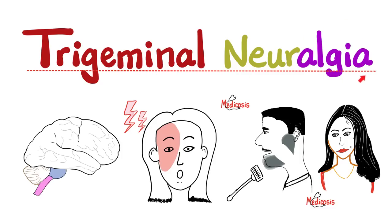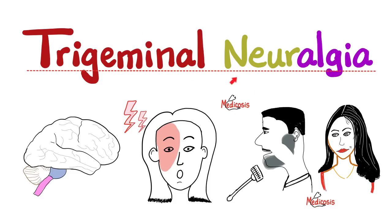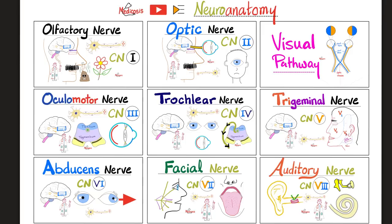What does 'algia' mean? Algia means pain — pain in the nervous system or pain of neurological origin. And which nerve are we talking about? We're talking about the trigeminal nerve, which is the fifth cranial nerve. Click the like button, click the subscribe button, and let's get started.